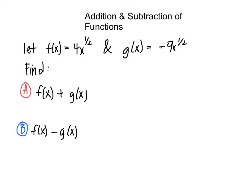So let's plug in our two equations. So we have 4x to the 1 half plus negative 9x to the 1 half.